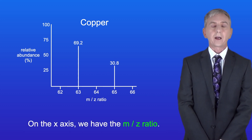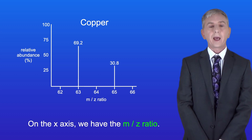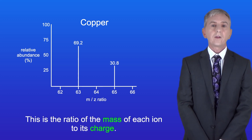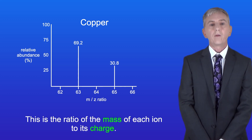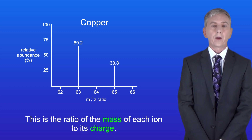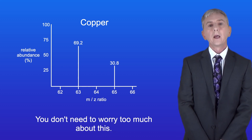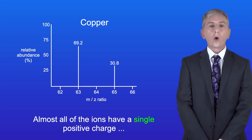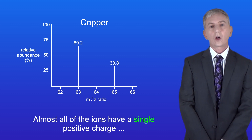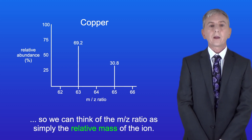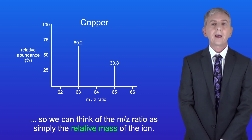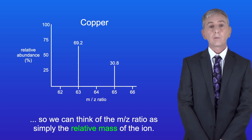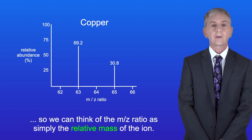On the x-axis we've got the m/z ratio. This is the ratio of the mass of each ion to its charge. You don't need to worry too much about this — almost all of the ions have a single positive charge, so we can think of the m/z ratio as simply the relative mass of the ion.